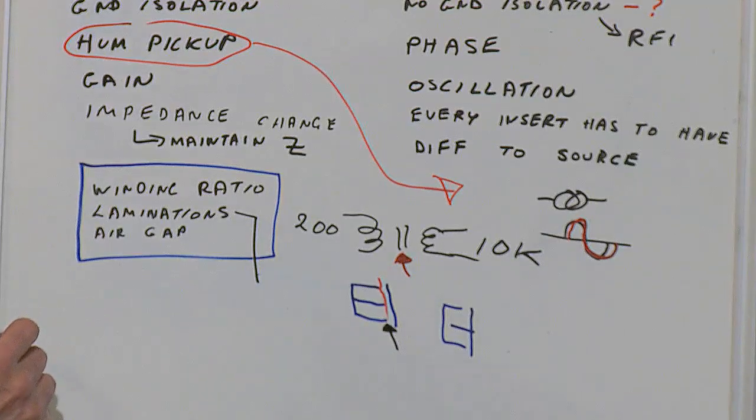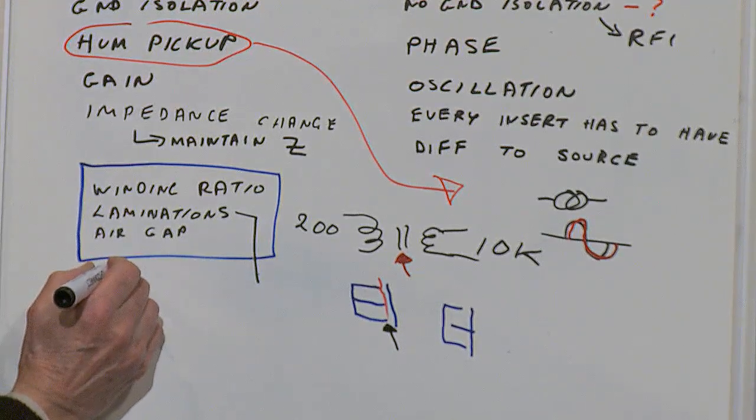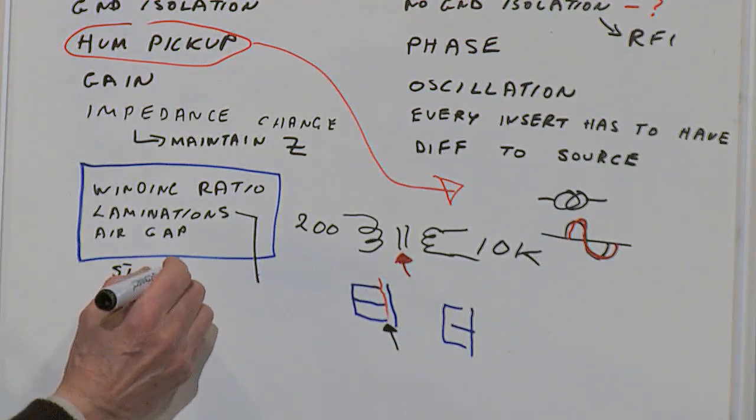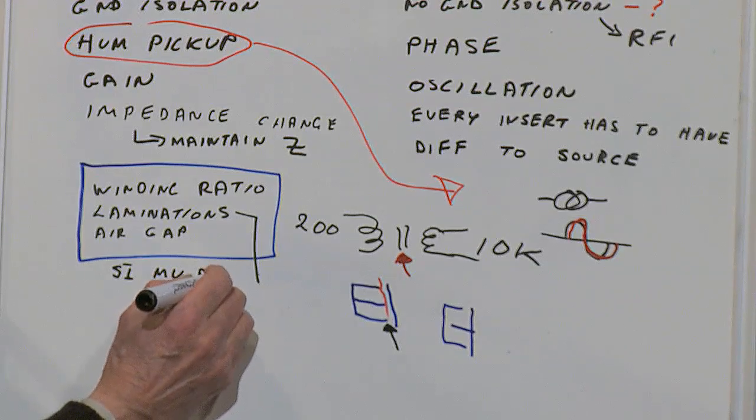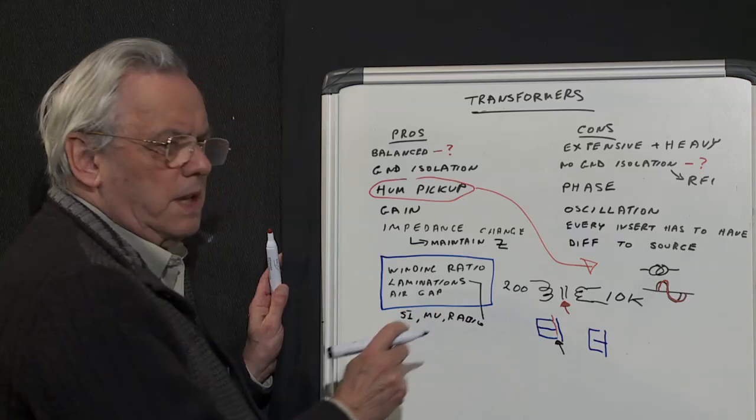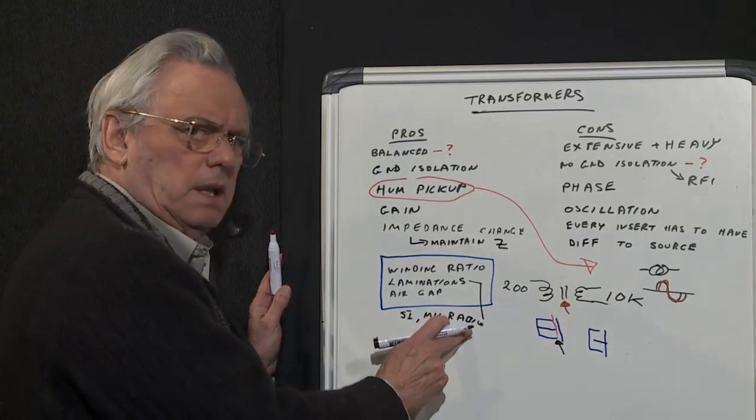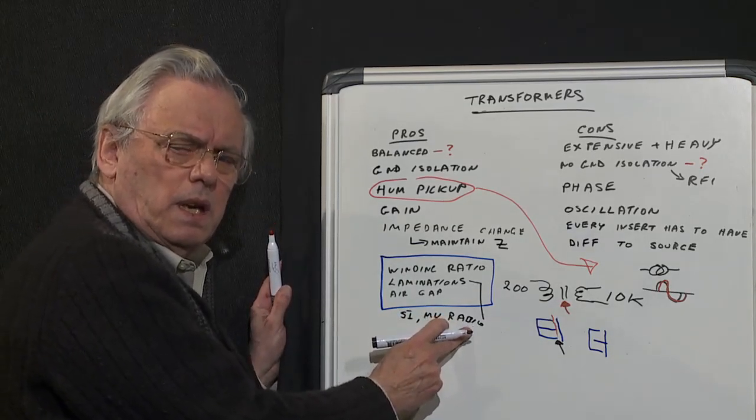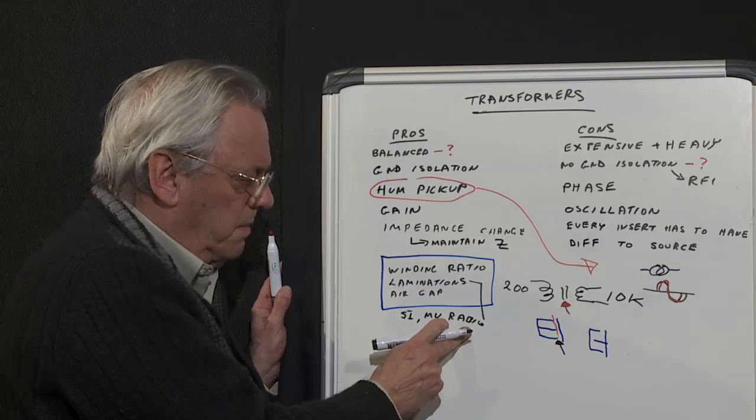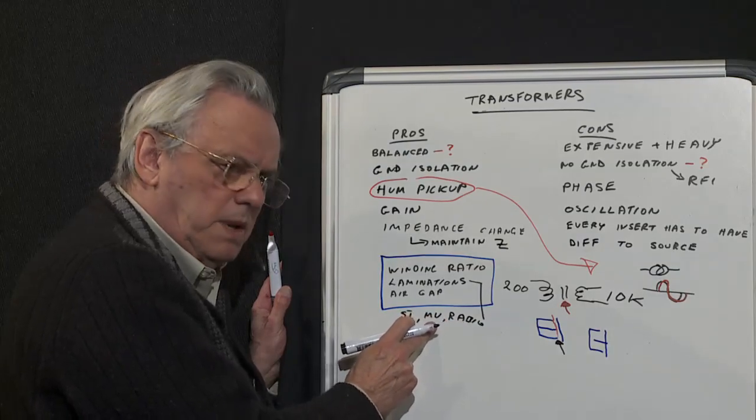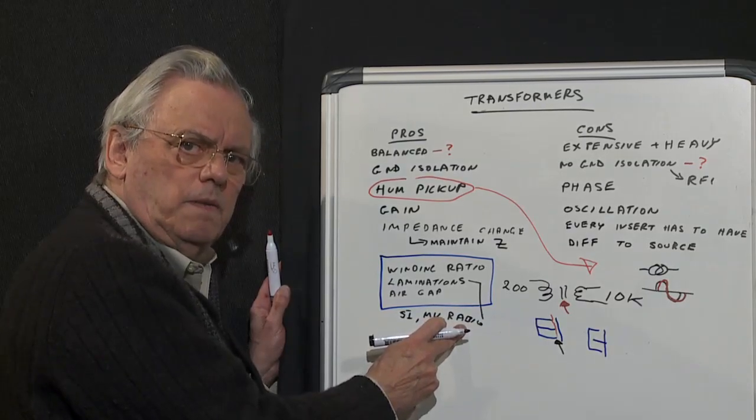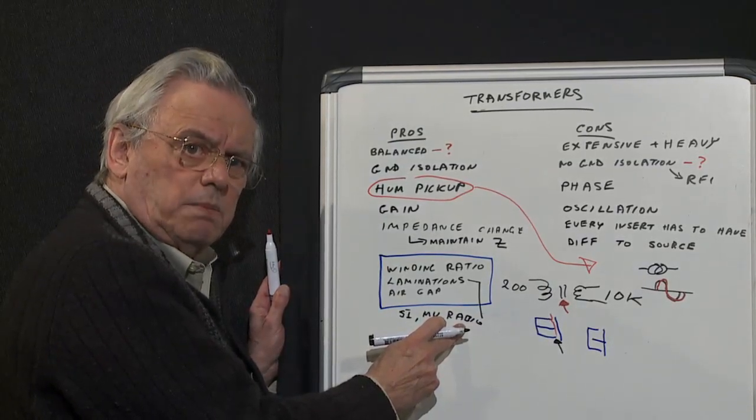Going back to laminations, there are several types of lamination: there's silicon iron, there's mu metal, and there's radio metal. I'm not sure you can still get radio metal. We used to use radio metal in the early A-range desks. Radio metal has the advantage over mu metal—radio metal is less efficient than mu metal but saturates at a much higher voltage.